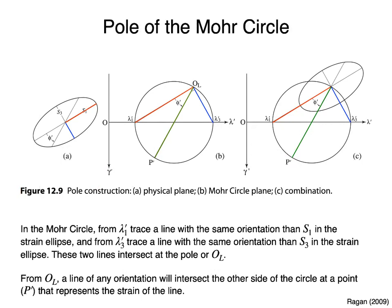The strain ellipse and the Mohr Circle can be even more closely related with the help of a special point on the circle called the pole or origin of lines. Figure A shows a strain ellipse, and Figure B shows the Mohr Circle for this deformation. To find the pole of the Mohr Circle, from lambda prime 1 trace a line parallel to S1 in the strain ellipse. Then from lambda prime 3 trace a line parallel to S3 in the strain ellipse. These two lines will intersect at the pole OL. From OL, a line of any orientation will intersect the other side of the circle at a point P' that represents the strain of the line. Figure C shows the strain ellipse centered at the pole, illustrating how the pole relates the strain ellipse and the Mohr Circle.